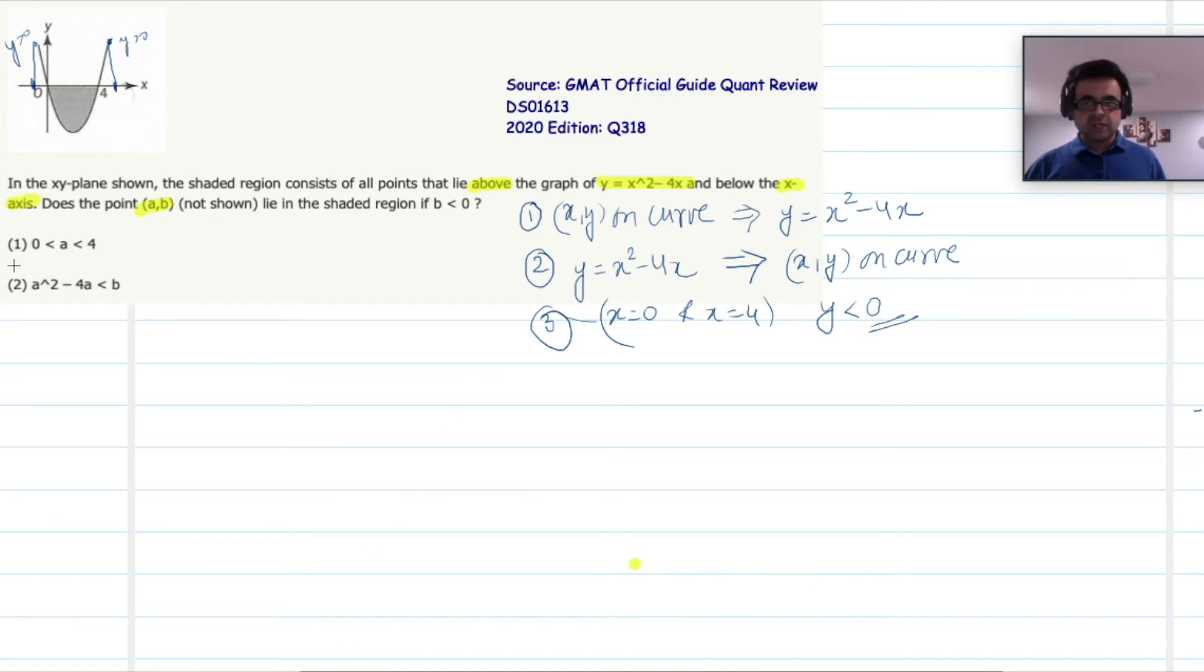So armed with these three inferences, let us start solving this question. I am given in the first statement that 0 is less than a less than 4, and a is the x coordinate for point (a,b). I am basically saying that a lies here. If you remember, we had said the possibilities of (a,b) were like this. And we are now given that a is between 0 and 4.